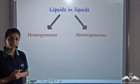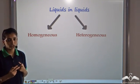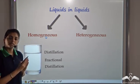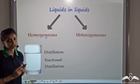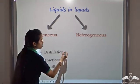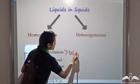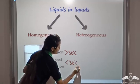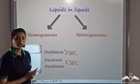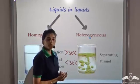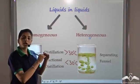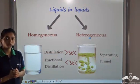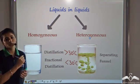Let's revise what we have studied. A liquid-liquid mixture can be homogeneous or heterogeneous. For a homogeneous mixture, we separate the two liquids using distillation or fractional distillation — distillation when the boiling point difference is greater than 30°C, and fractional distillation when the difference is less than 30°C. For a heterogeneous mixture, we use a separating funnel, which marks a clear distinction between the heavier and the lighter liquid. This is how we use the different separation techniques for a liquid-liquid mixture.